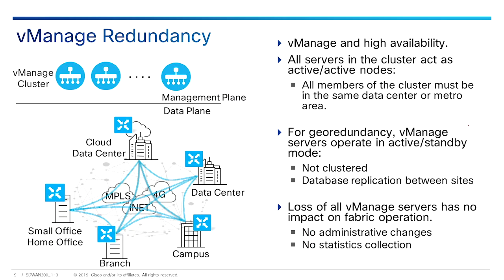vManage is going to scale as a cluster. From any other device such as a vEdge, vManage appears as one single IP address, and load balancing between devices within the cluster is not visible to other devices. Within a cluster, all vManage instances are in active-active mode. For this to work, all members of a cluster must be in the same metro area to keep delay between servers low. If failover between regions is required, only an active-standby model is supported. The vManage database is synchronized between sites, but only the active vManage cluster is visible to the network during normal operation.